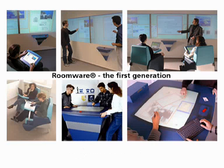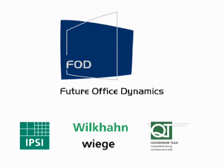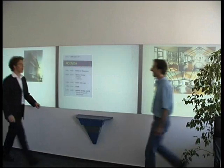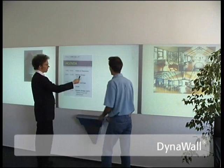In 1997 we started to develop the roomware concept, and in 1999 we built the second generation of roomware components. The DynaWall is a large interactive wall with about 5 square meters of touch-sensitive interactive display.